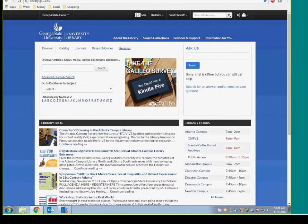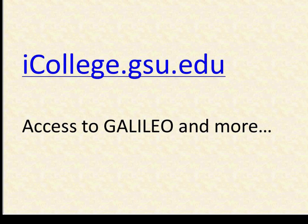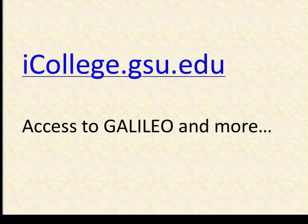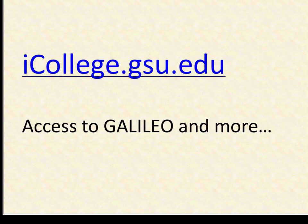Just to sum up: we've gone through some search tips, looked at specific databases, and spent an hour getting oriented to some of these library resources. We really don't want you to struggle finding secondary sources for your literary criticism. If you are having trouble, any librarian at any campus can help — we've shown you contact information and the chat feature. Please reach out to us; we're always happy to help. The library can be complicated, so reach out, don't suffer, and just let us know what we can do for you. Thank you, and have a great day.